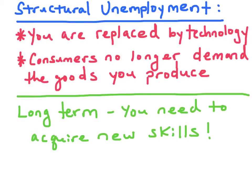Structural unemployment is generally long-term. It's long-term because there's a mismatch of skills. If you are structurally unemployed, chances are you have to move or go back to school for retraining. Structural unemployment occurs if you are replaced by new technology, or if consumers no longer demand the goods that you produce.